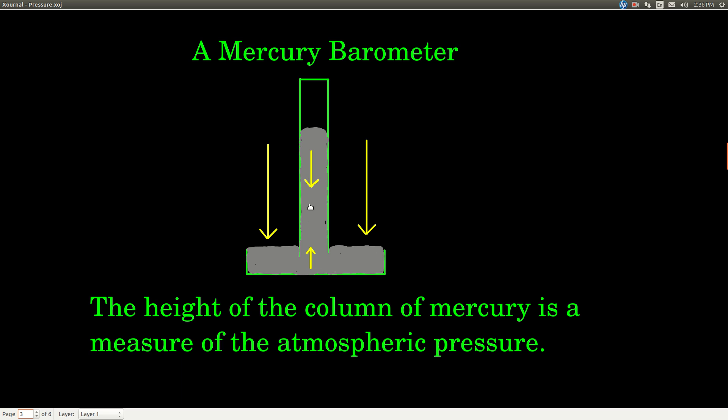Then you invert it. The top is closed, the bottom is open, and you invert it and put it into the pool of mercury. The atmosphere is exerting a pressure evenly over the surface of this pool of mercury. It's going to go where there's less pressure, the path of least resistance, which is up inside of this column of glass. This pressure exerted here is due to the atmosphere pushing down.